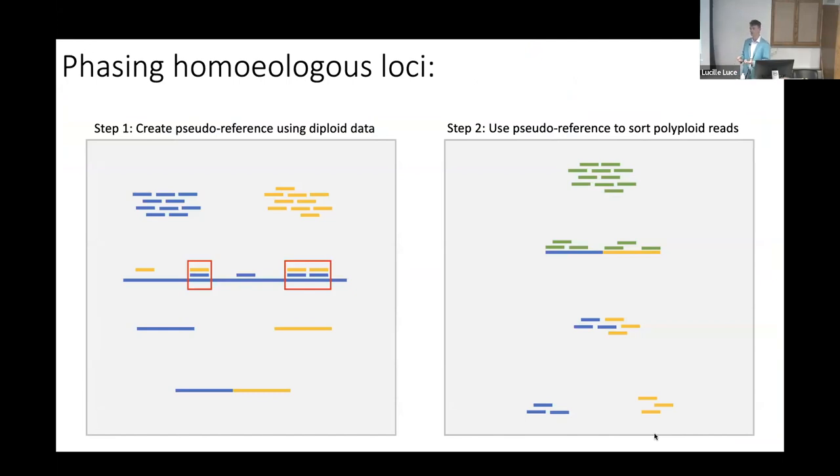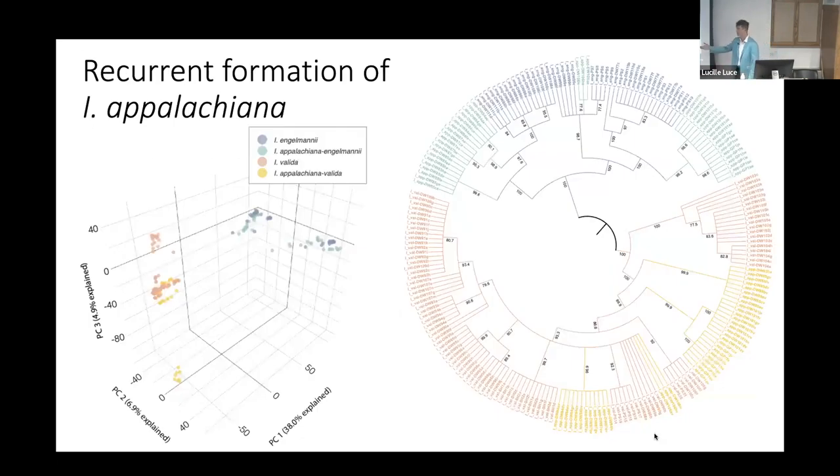But before I could do anything with that data, I had some work to do. Working with allopolyploids is difficult because essentially you're looking at a genome that contains two divergent genomes of different evolutionary histories, which makes phylogenetic and population genetic analysis difficult. I used a somewhat unorthodox approach adapted from a Bomberley et al. paper on soybean, creating a pseudo reference using my diploid RAD-seq data. I mapped it to a reference assembly from Isoetes engelmannii, pulled out regions where both diploid parents mapped, and created my pseudo reference assembly. Then I mapped my polyploid reads to it. Reads that mapped differentially to one parent or the other were retained for downstream analysis and treated as separate diploid populations.